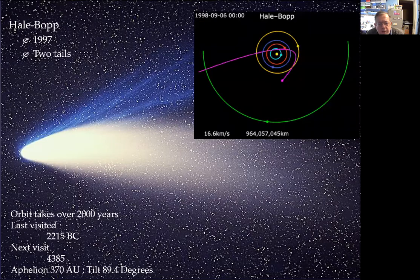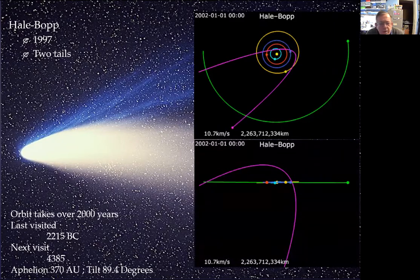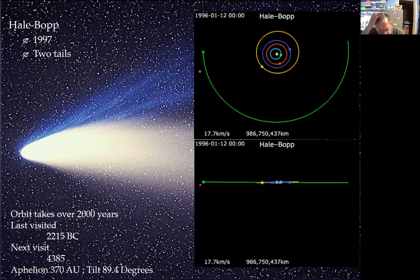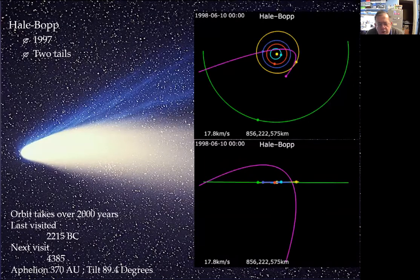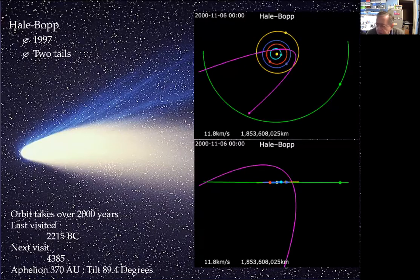Looking at Hale-Bopp's trajectory, it had a close approach to Mars on the way out, and then slowing down as it disappears from the solar system. With the plane of the solar system flat, you can see it came in over the top and then disappeared out almost at right angles — almost from the pole of the sun. A quite inclined orbit.